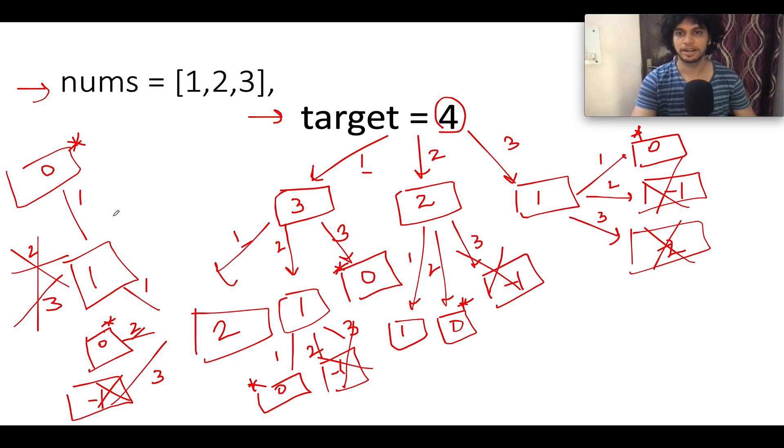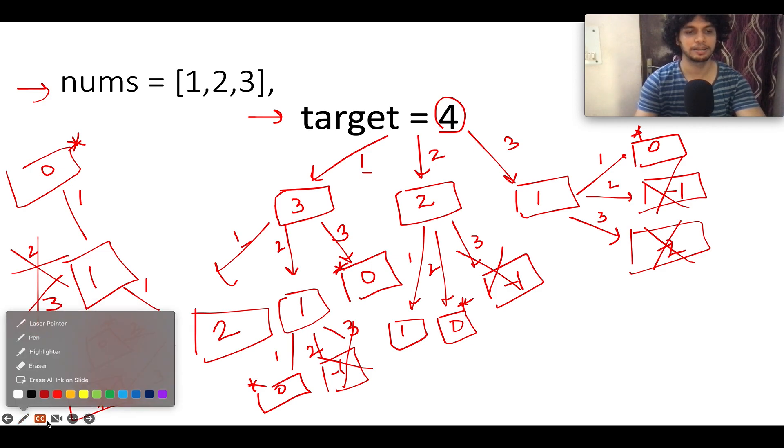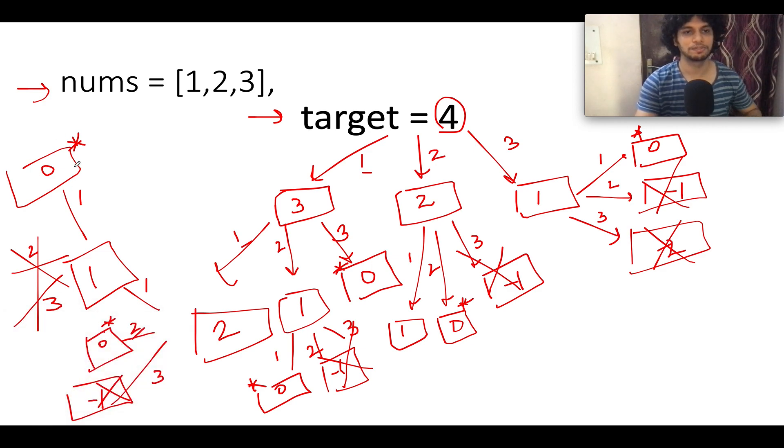So in total, I think we have iterated over all the cases and let's see how many such combinations we were able to identify. Let me just change the color of pen for better understanding. Let's take green. So the first path is this one, 1, 1, 1, 1. So this is the first path as I have just highlighted.